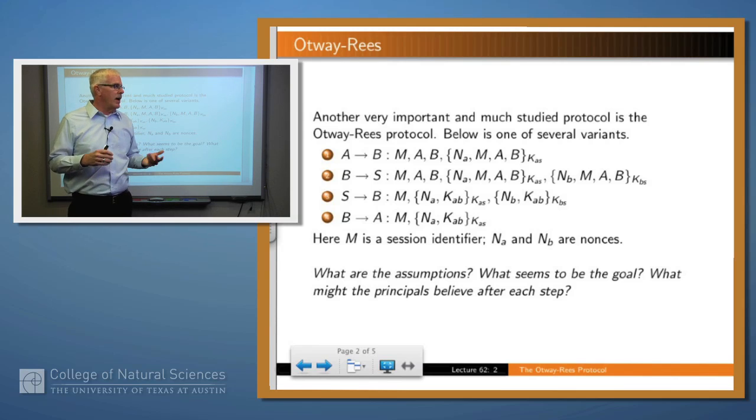Here's the protocol. A sends to B a message that contains several fields: M, which is called a session identifier and is assumed to be unique for each run of the protocol; A and B; and then an encrypted part which contains a nonce, M, A, and B.